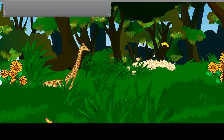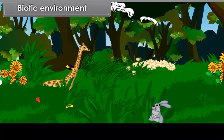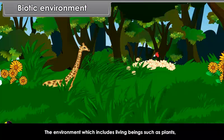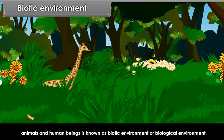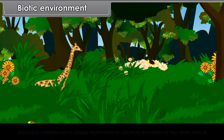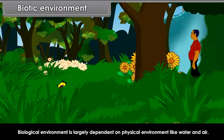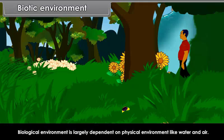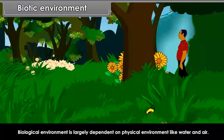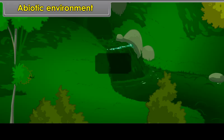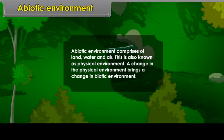Biotic environment: The environment which includes living beings such as plants, animals, and human beings is known as biotic environment or biological environment. Biological environment is largely dependent on physical environment like water and air. Abiotic environment comprises of land, water, and air. This is also known as physical environment. A change in the physical environment brings a change in biotic environment.